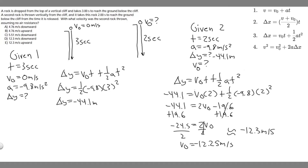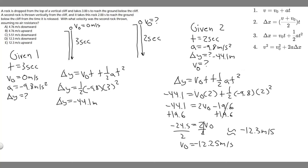Looking at our answer choices, notice d and e are both 12.3 — one downward and one upward. The minus sign signifies we're going down, so the negative velocity indicates downward. The answer to this problem is d: 12.3 meters per second downward. Hopefully you found this useful.